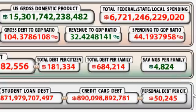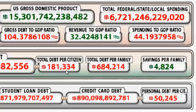This screenshot is from the summer of 2012. The numbers I want to go over: the US GDP has gone up from 15 to close to 19. The debt has gone from 104 and a third to 105 and two-thirds. The debt per citizen was 181, now up to 206. Debt per family is 808 — so it went up about 124 in less than five years. That's like 20%, that's way too high.